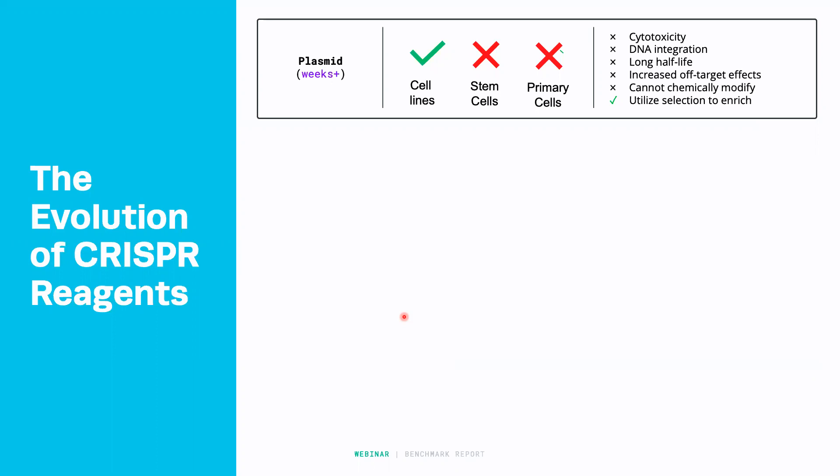Lastly, one of the potential benefits of using a plasmid is that we can leverage selection to enrich that population of cells. However, as I'll speak to in part of this presentation, that may actually not be something that we want to do.